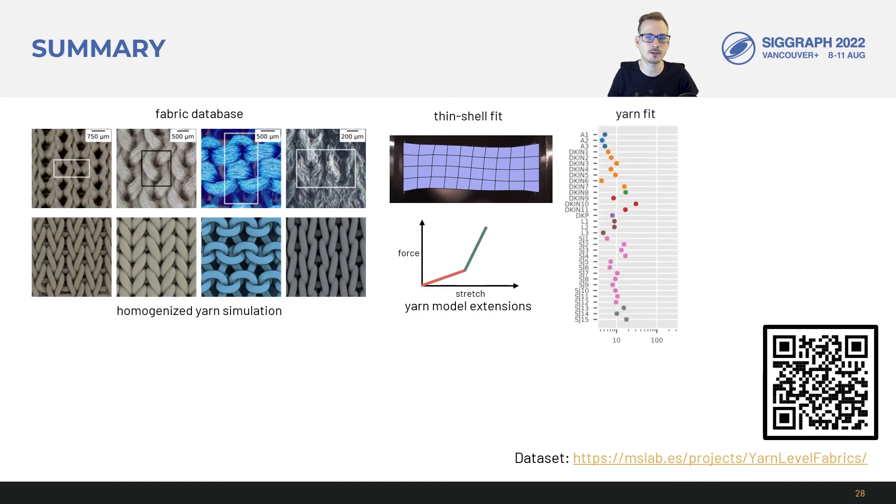In the future we hope that this pipeline could be extended to include cloth hysteresis and model yarn friction or fuzz. The data set could be grown to include a wider range of fabrics such as 3D woven or warp knitted fabric.